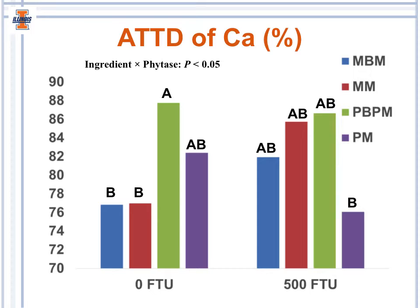For the apparent total tract digestibility of calcium, in the absence of phytase, the diet containing poultry byproduct meal was greater than the diet containing meat meal or meat and bone meal. However, in the presence of phytase, there was no difference in the digestibility of calcium among dietary treatments.